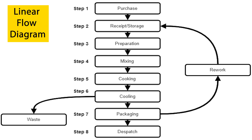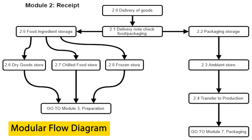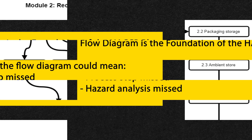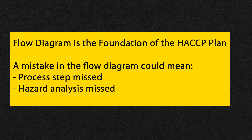The other type is a modular flow diagram. If the process is complicated and has sub-stages or sub-parts, we create each process in a module and link them together. The flow diagram on your screen shows a representation of a modular flow diagram. In both cases, if somebody follows the flow diagram, they can understand the process and go through the whole detail. The flow diagram is the foundation of the HACCP plan — if a step is missed, the hazard analysis of that step is also missed.